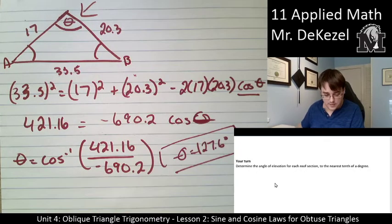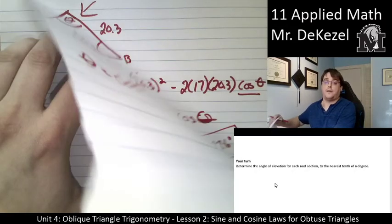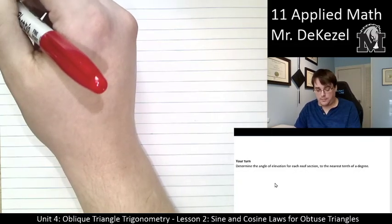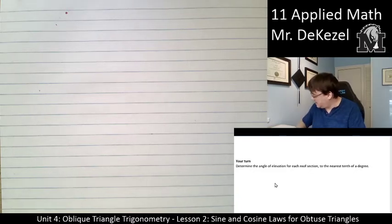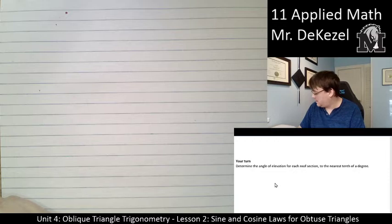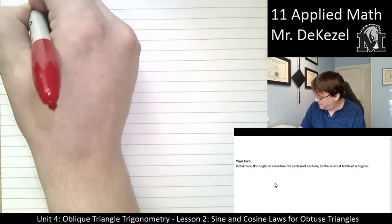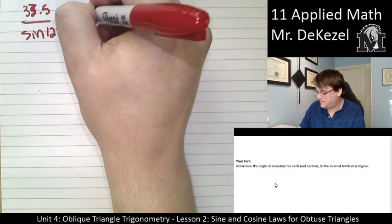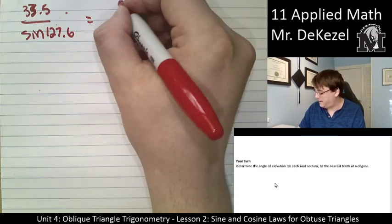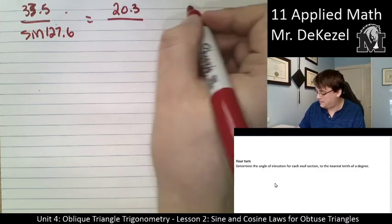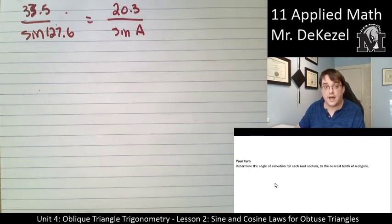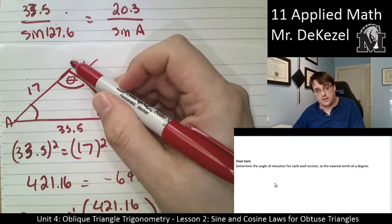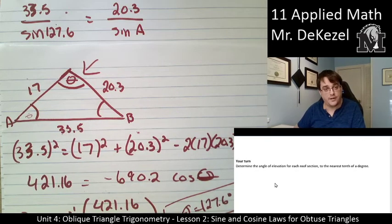Okay. So we have our cosine law, but I think I would like to use the sine law here. Because I have a pair, now I can use the sine law. So I'm going to have 33.5 divided by the sine of 127.6 is equal to, I'm going to find angle A first. So it's 20.3 divided by the sine of A. So what I'm doing here is I'm using this pair that I know so that I can find this angle now, sine of A.